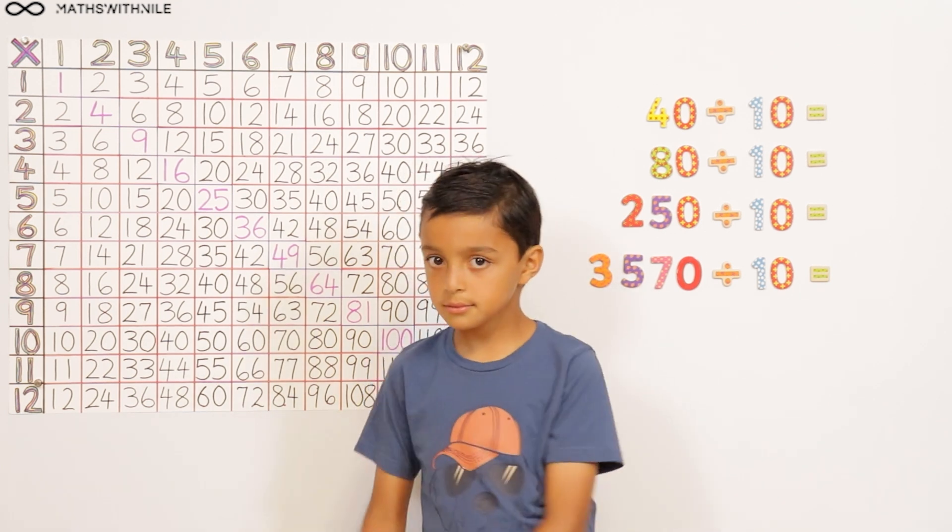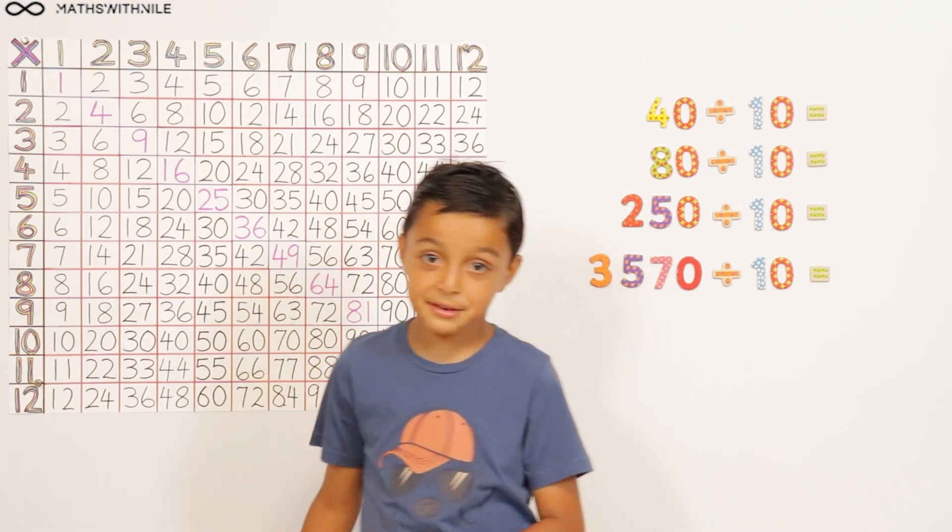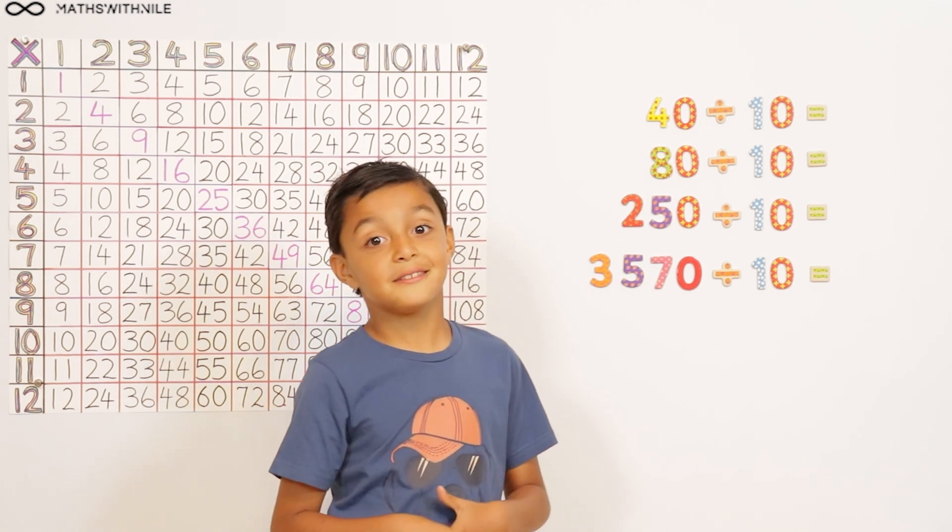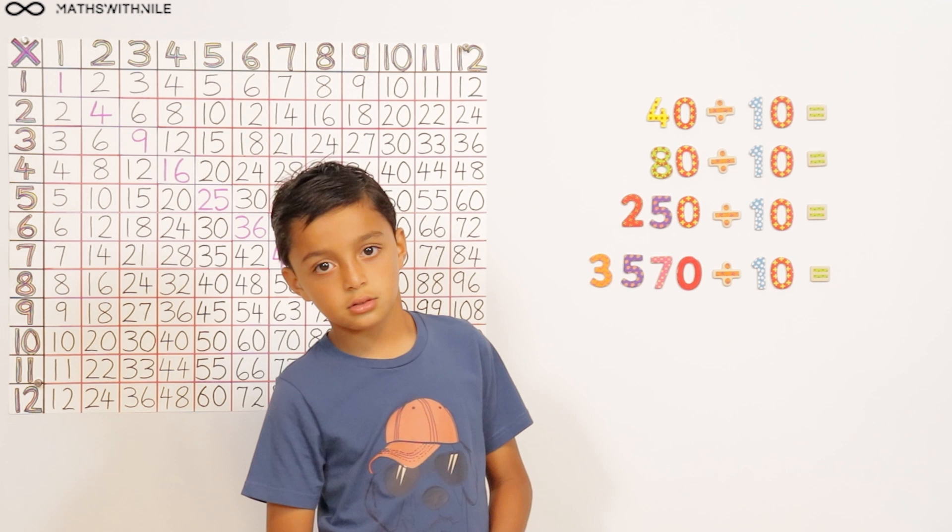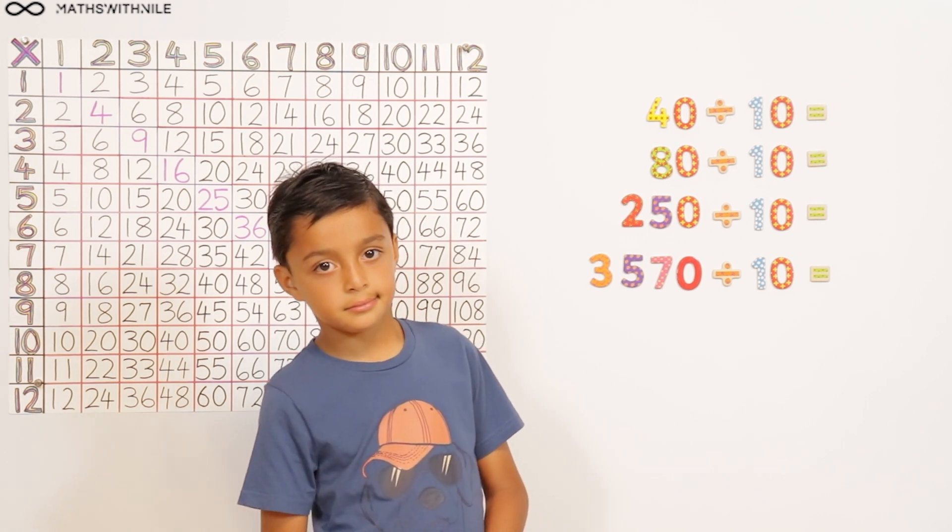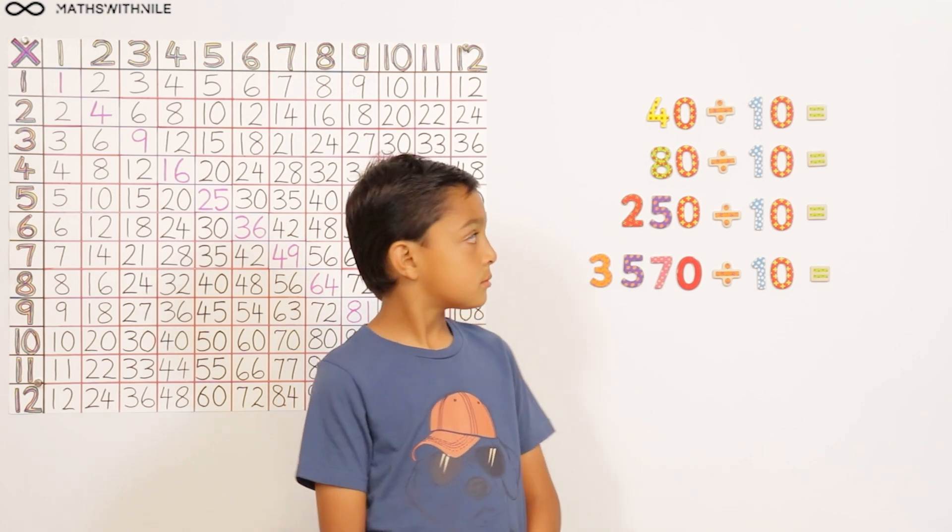So do you know what we do when we divide a number by 10? Take away a zero. Very good. So can you do those if there is one? If there is a zero, that's a good point because it doesn't work if the number doesn't have a zero. So with that in mind, can you work out those four questions on the board?